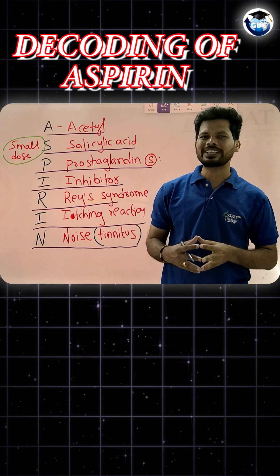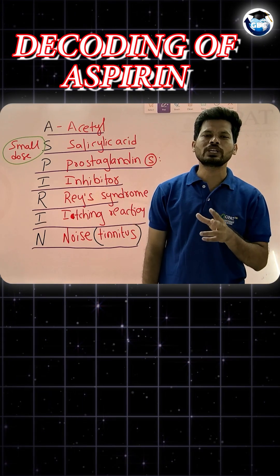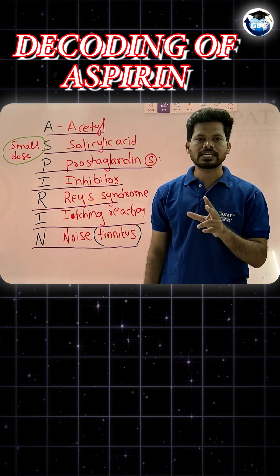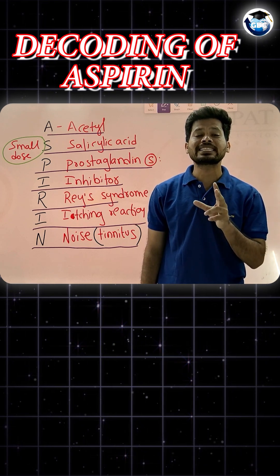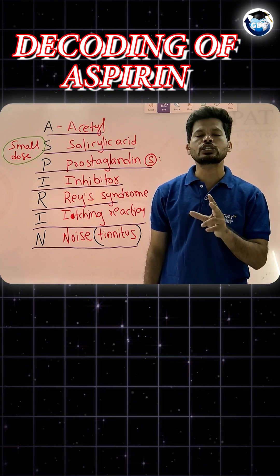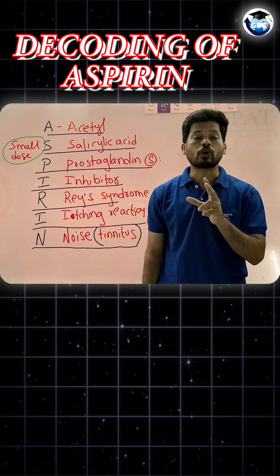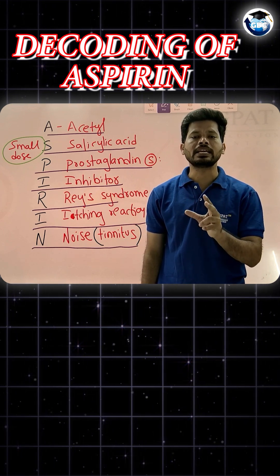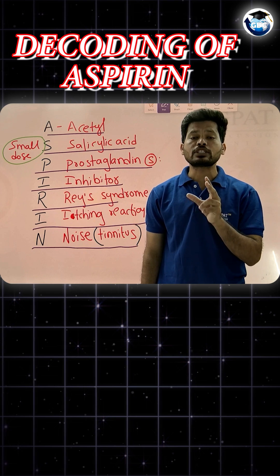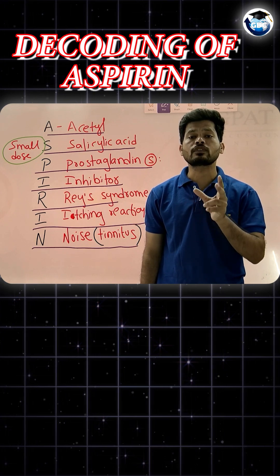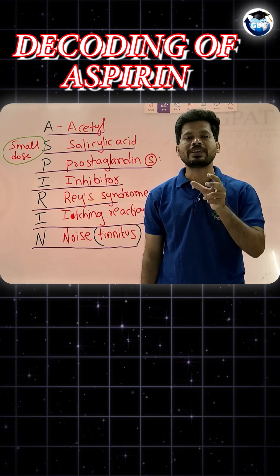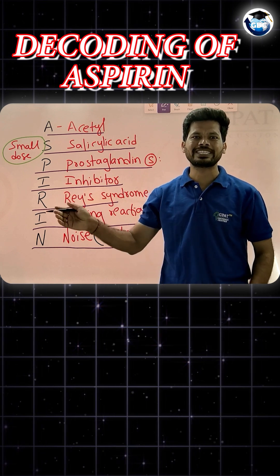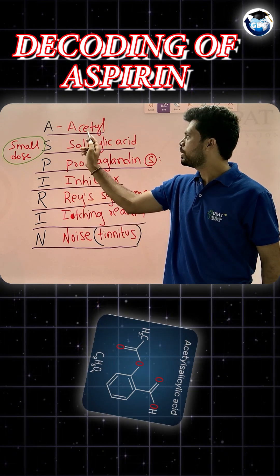Let's decode aspirin. Aspirin is chemically acetylsalicylic acid and comes under NSAIDs — non-steroidal anti-inflammatory drugs. One unique thing about aspirin is that it is the only NSAID that irreversibly causes acetylation of COX-1 and COX-2 enzymes, thereby decreasing the synthesis of prostaglandins.